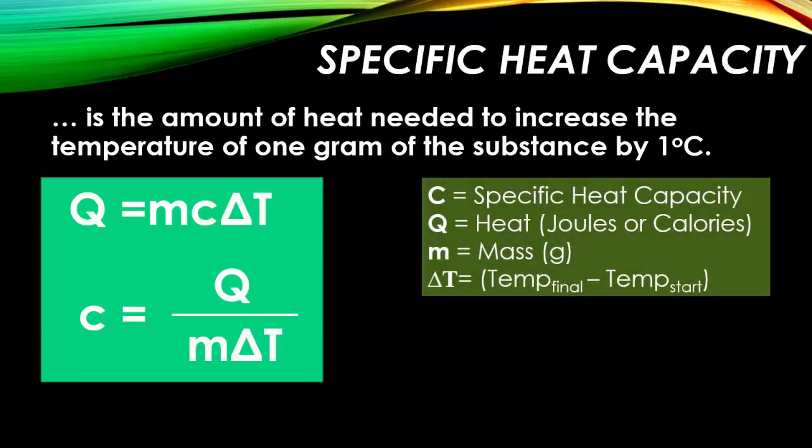The variables are C equals your specific heat capacity, while Q equals heat, which can either be in joules or calories. M will always be the mass of your sample, and ΔT represents the final temperature minus your starting temperature. The units for specific heat capacity can either be in joules per grams per Kelvin or calories per grams per Kelvin.